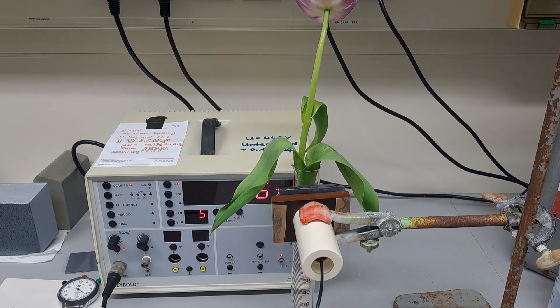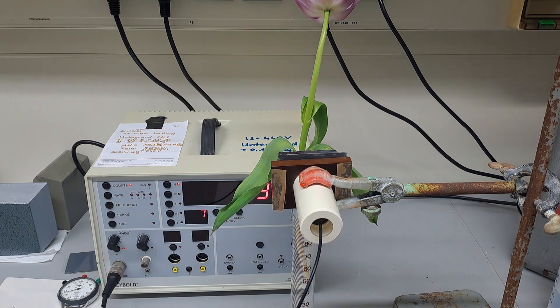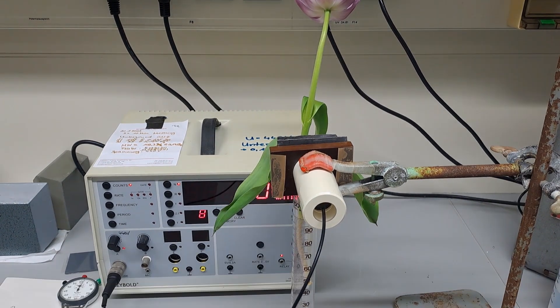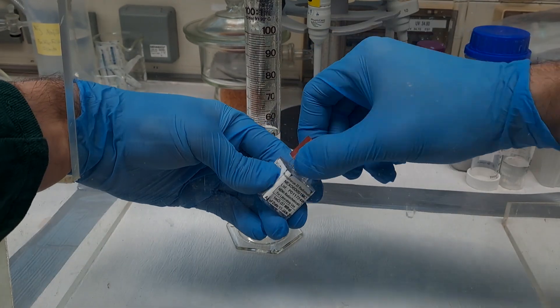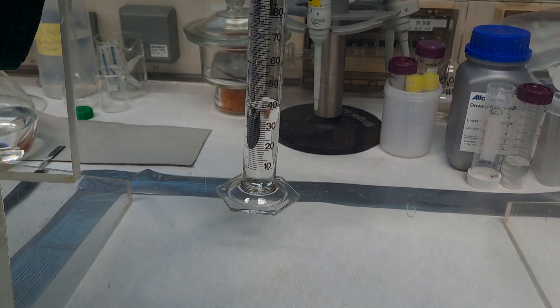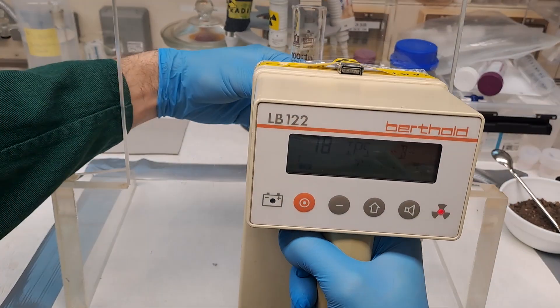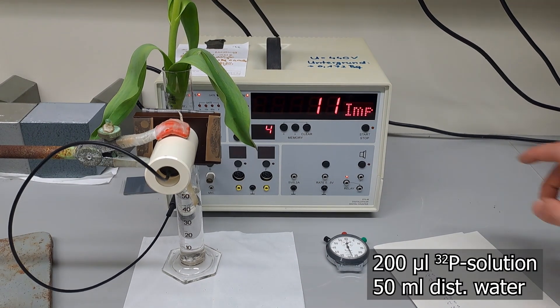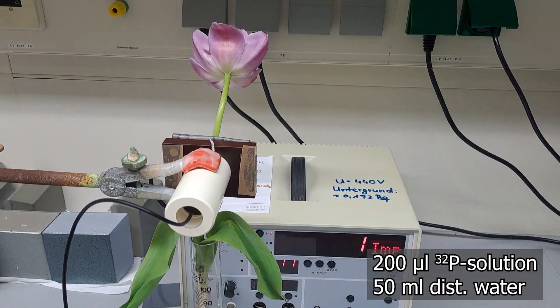The plant was first soaked in 50 milliliters of distilled water and measurements were taken every two centimeters to establish a baseline. Yes, the distilled water is hypertonic, but the plant will die in three to four days anyway. Next, 200 microliters of the phosphorus-32 solution was added to the 500 milliliters of distilled water. The plant was left there for 15 minutes. As you can see, nothing visibly happened.